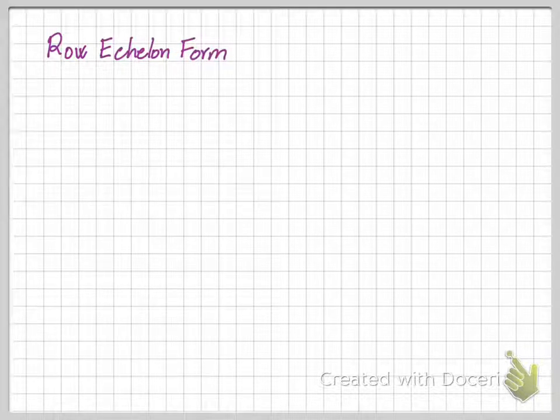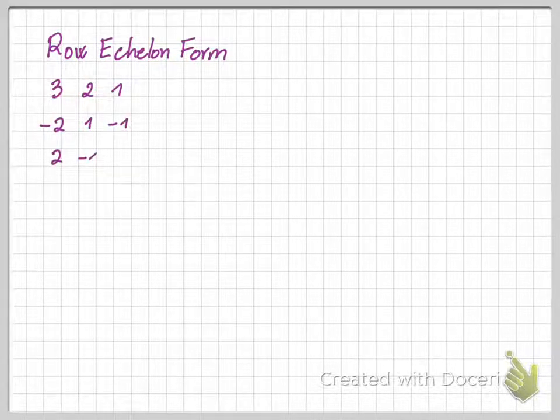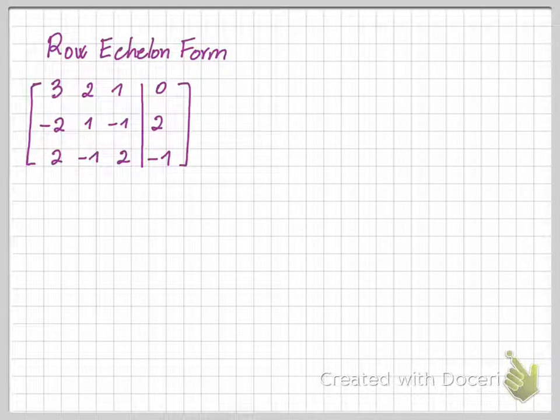This video shows how to transform a matrix into its row echelon form. For an example, we have a 3 by 4 matrix and we want to transform it into row echelon form.